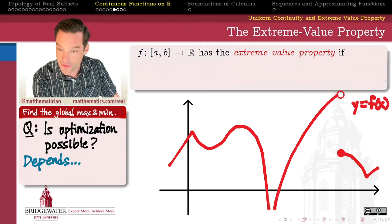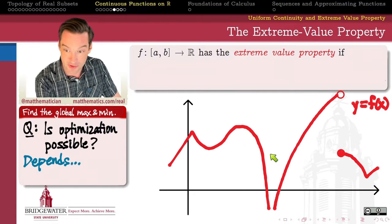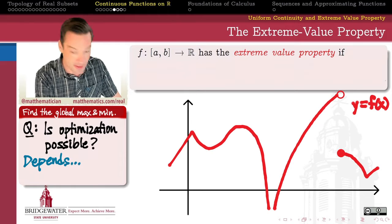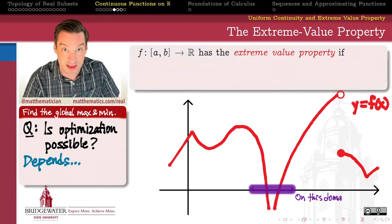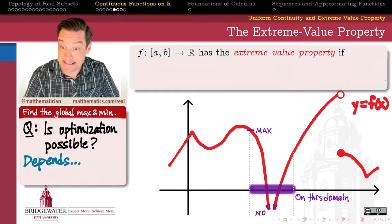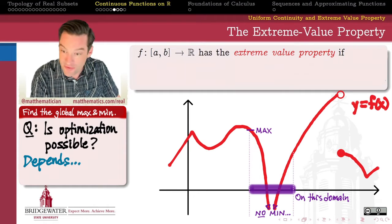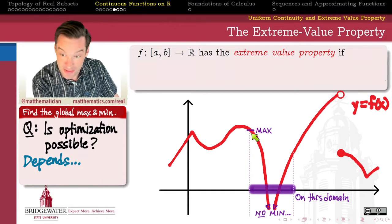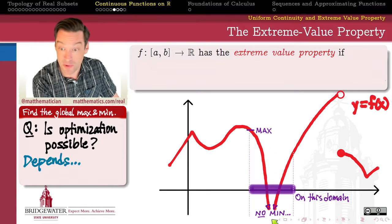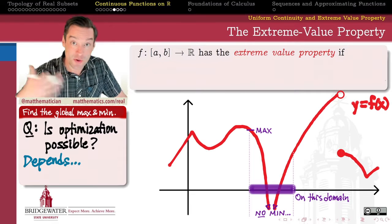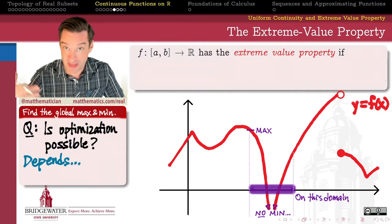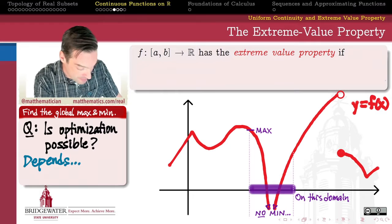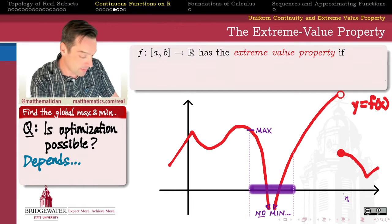Whether or not this is possible probably depends on a lot of factors. In particular, if you give me a function whose graph has a lot of weird stuff going on, then we could have some problems. For example, if the domain is this subset of the x-axis, I may be able to identify a global maximum value, but if this thing craters down to a vertical asymptote where the function approaches minus infinity, then there isn't going to be a minimum value at all anywhere on this particular domain.